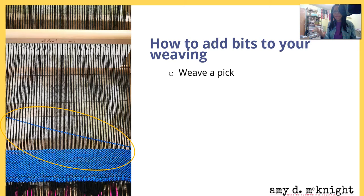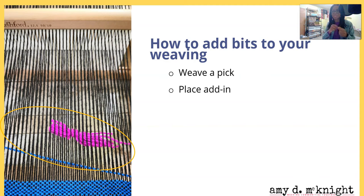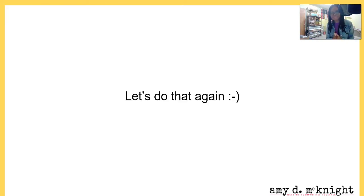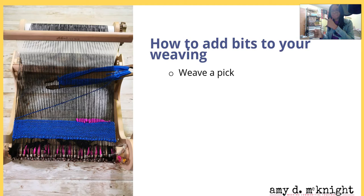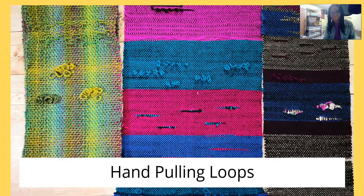So how do you use these things? It's super simple. You're going to weave a pick, place the add-in, beat, and then change sheds. Let me show you — you can even use knotted pieces, like the knots from the tie-on from the last video; it all works. Let's do it again: weave a pick in the opposite direction, put the add-in in, beat, and change sheds. That is it — simple.